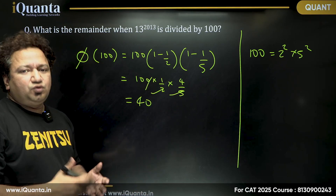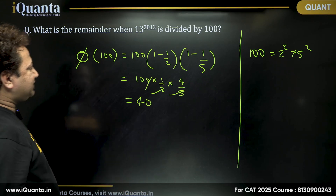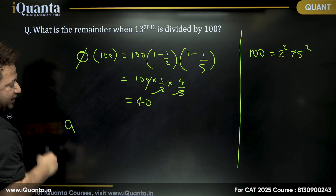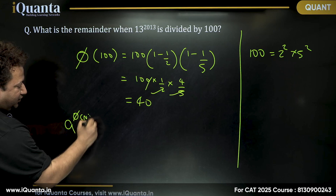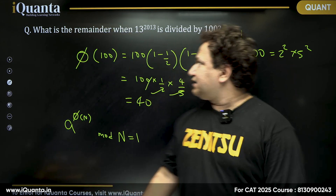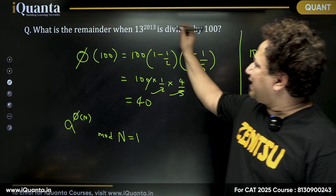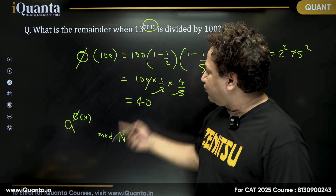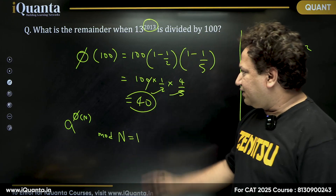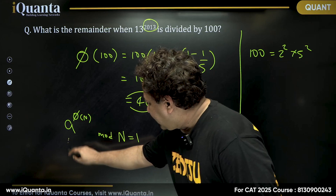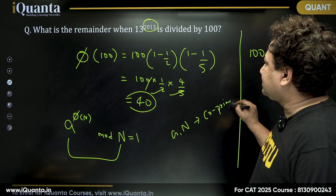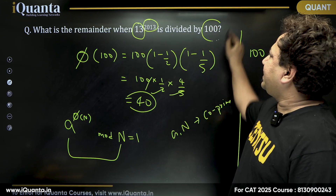According to Euler's theorem, for any number a, a^φ(n) mod n is always equal to 1. This means if I want to divide something by 100 and the power is 40 or a multiple of 40, the remainder will always be 1. The condition is that a and n must be co-prime. Are 13 and 100 co-prime? Yes, because 13 is a prime number and 100 is made of 2 and 5. So we can use this theorem.